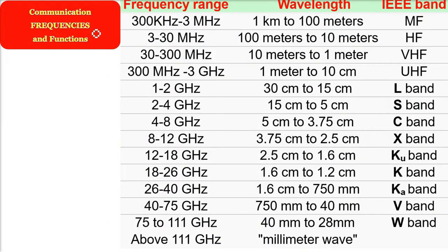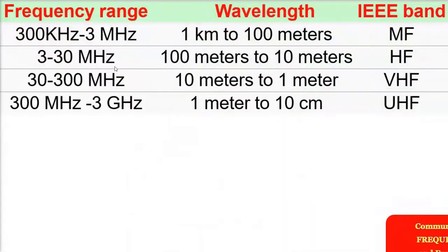In communication we have different frequencies. We have radio frequencies, microwaves, and then we have millimeter waves. There are certain ranges of frequency and we will see one by one.